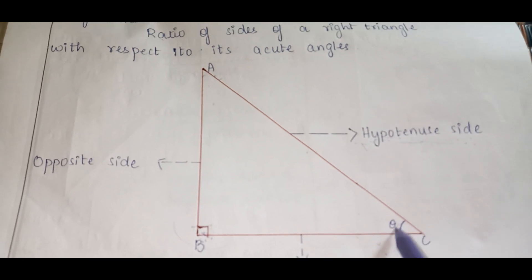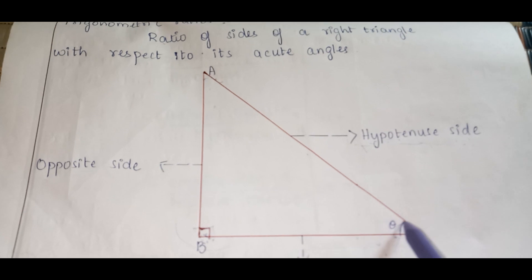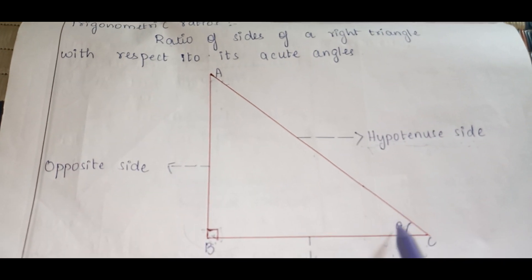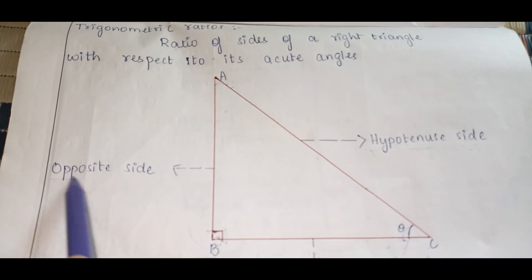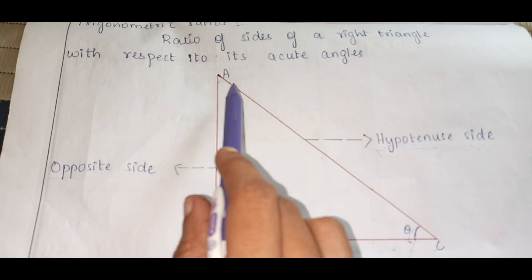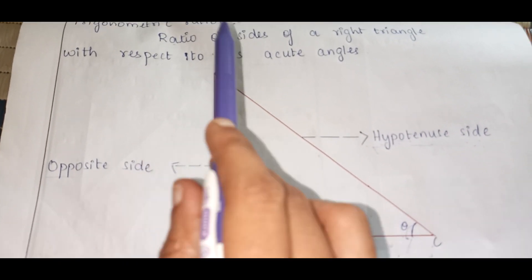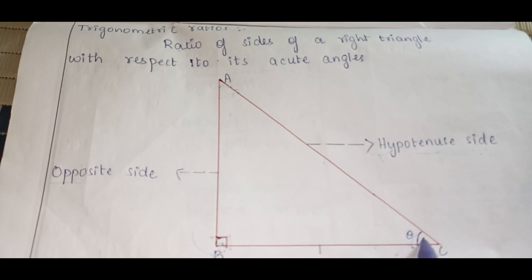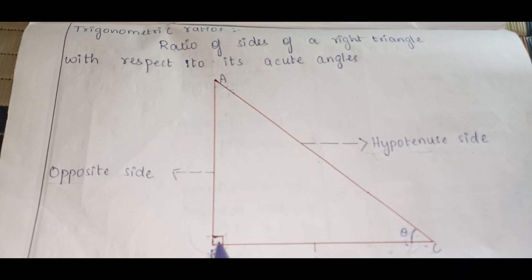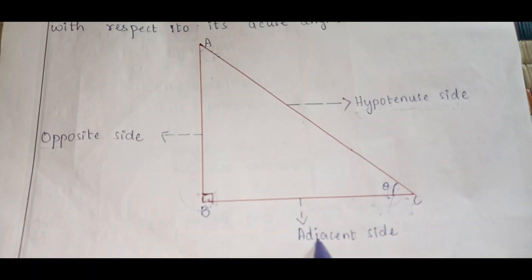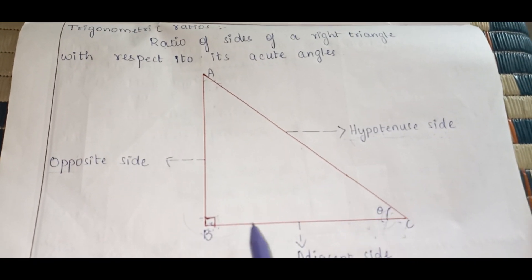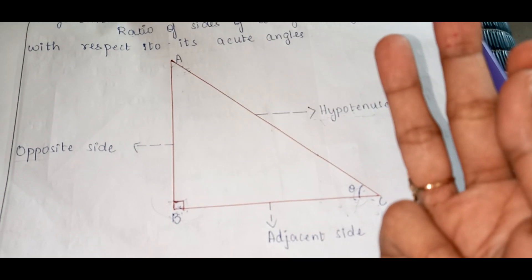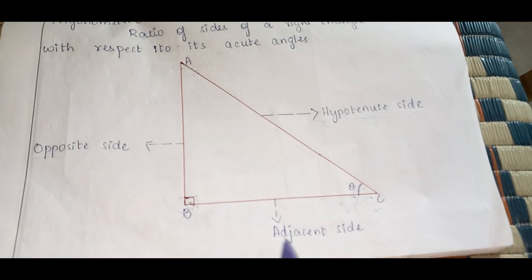AC is called the hypotenuse side. The hypotenuse is the side which is just opposite to 90 degrees and it is the longest side in the triangle. The side which is opposite to theta is called the opposite side — if theta is at point C, then AB is the opposite side; if theta is at the other angle, then BC becomes the opposite side. The remaining side, which is nearby to theta, is called the adjacent side. So we have three sides: hypotenuse (opposite to 90°), opposite side (opposite to theta), and adjacent side.